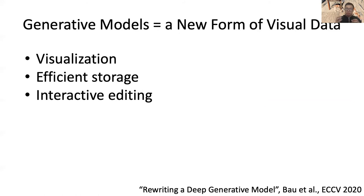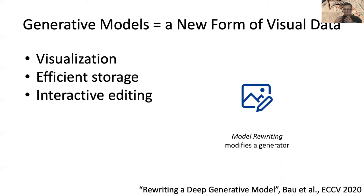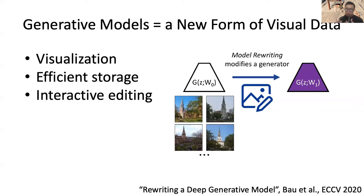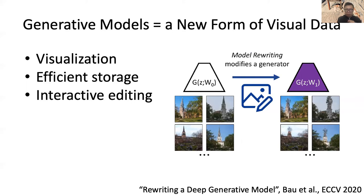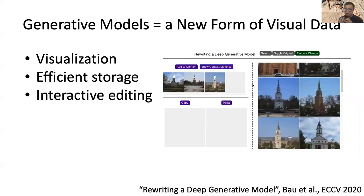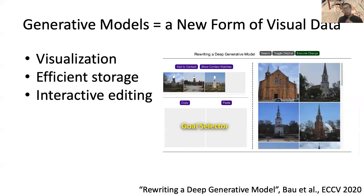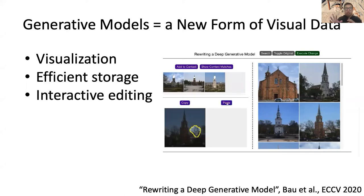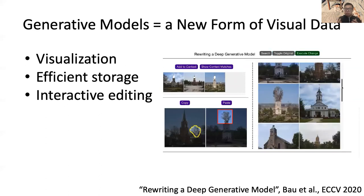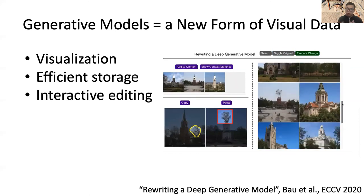I'm also interested in how a user can edit a model. Given an input model, we try to edit its weights — we are not editing the image, we are editing the model's weights. Once you edit the model's weights, you can generate a whole new set of effects — for example, trees on top of a tower — and generate an infinite number of images with this effect. We annotate a few tower locations, grab a tree from one of the images, place it on top of the tower accurately, and then change the weights so the model always generates trees on top of towers. This allows artists to customize a model and create a new, creative model that you cannot learn from a dataset.